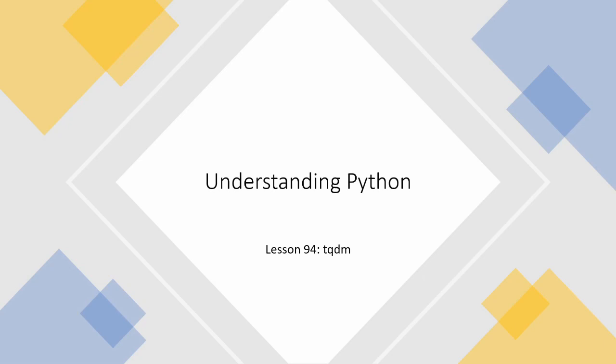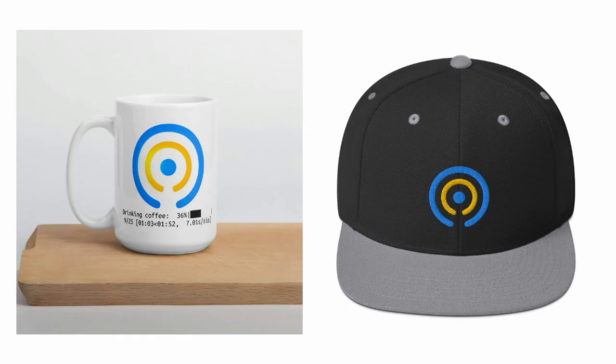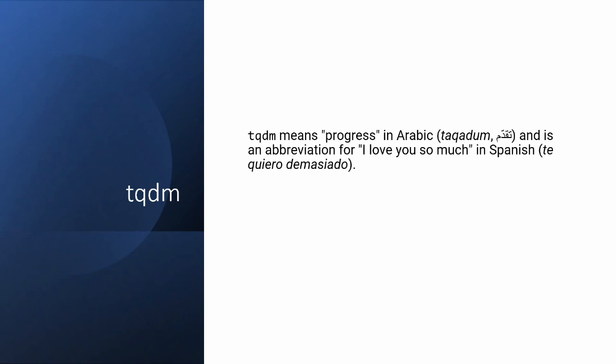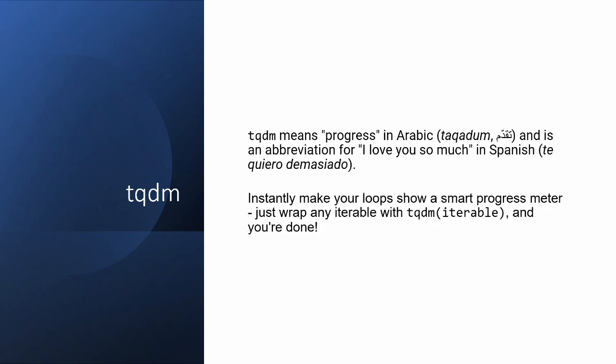Welcome back. Today we're going to be looking at TQDM in Python. They have quite a cool logo and you can actually buy their merchandise with the logo on it, which you can't do for most Python libraries. But what does TQDM do? Well, it means progress in Arabic and it's an abbreviation for 'I love you so much' in Spanish, but you use it to get a smart progress meter, and it is pretty simple in terms of how it's used.